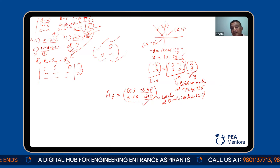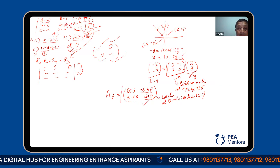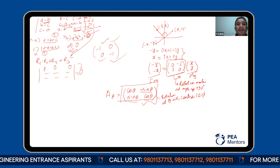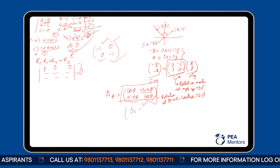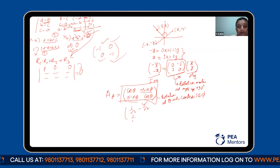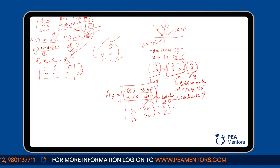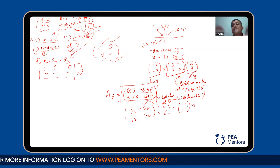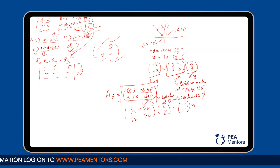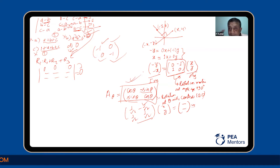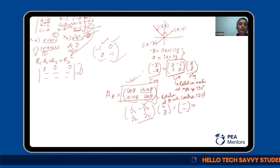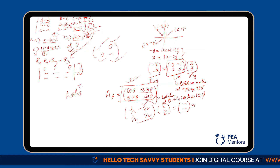And the general matrix gives the benefit for the 45-degree case: 1/√2, -1/√2; 1/√2, 1/√2.